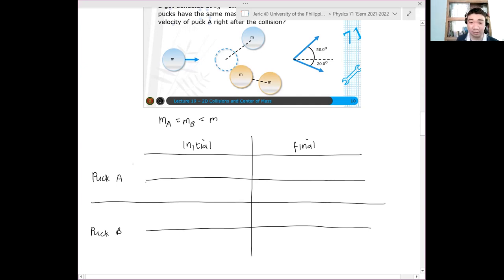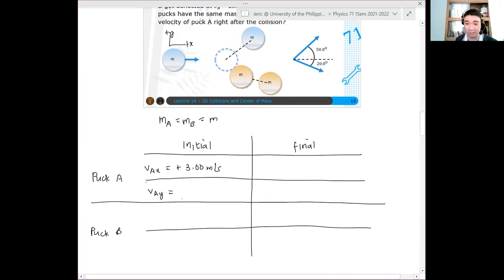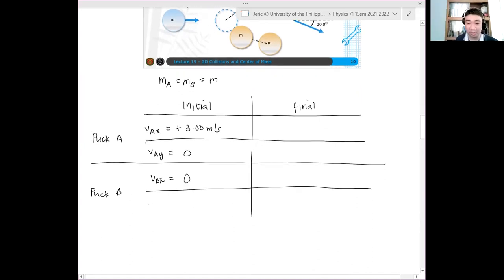What is the initial velocity of puck A in the x-direction? Positive 3. It's positive 3 meters per second. So this is plus 3.00 meters per second. The sketch is already there, we don't need to redraw it. Now, what is the initial velocity of puck A in the y-direction? Zero. Zero because it is not moving with respect to the positive y. So this is just zero. Now, what about the velocity of puck B with respect to x? Zero. Zero because both the x and y components are zero because puck B is initially at rest.